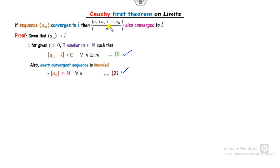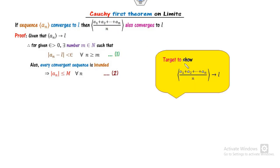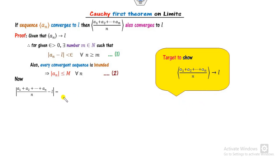Now using equations 1 and 2, we can prove the result. Our target is to show convergence, so we apply the definition again. Starting from here, our goal is to show that the expression is less than epsilon — if we achieve that, it means the sequence converges to l.